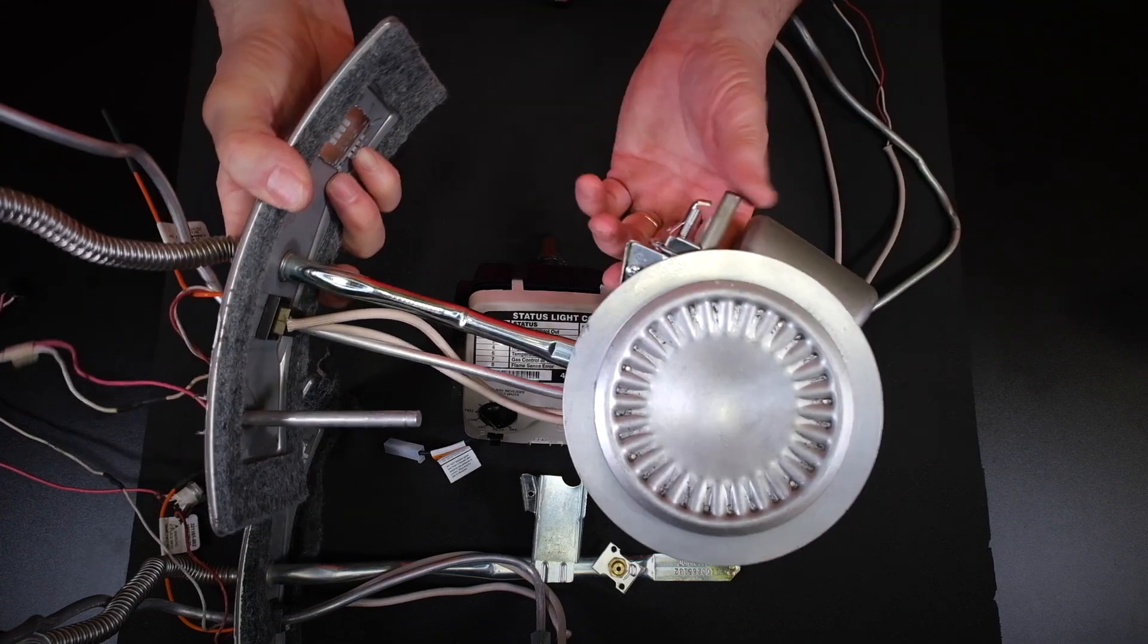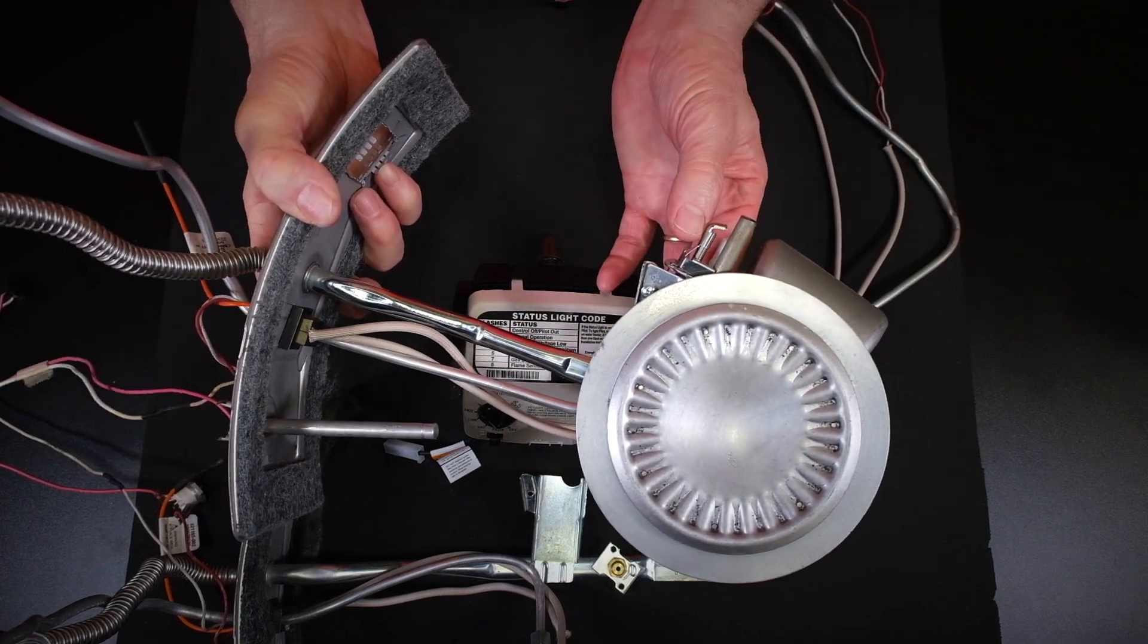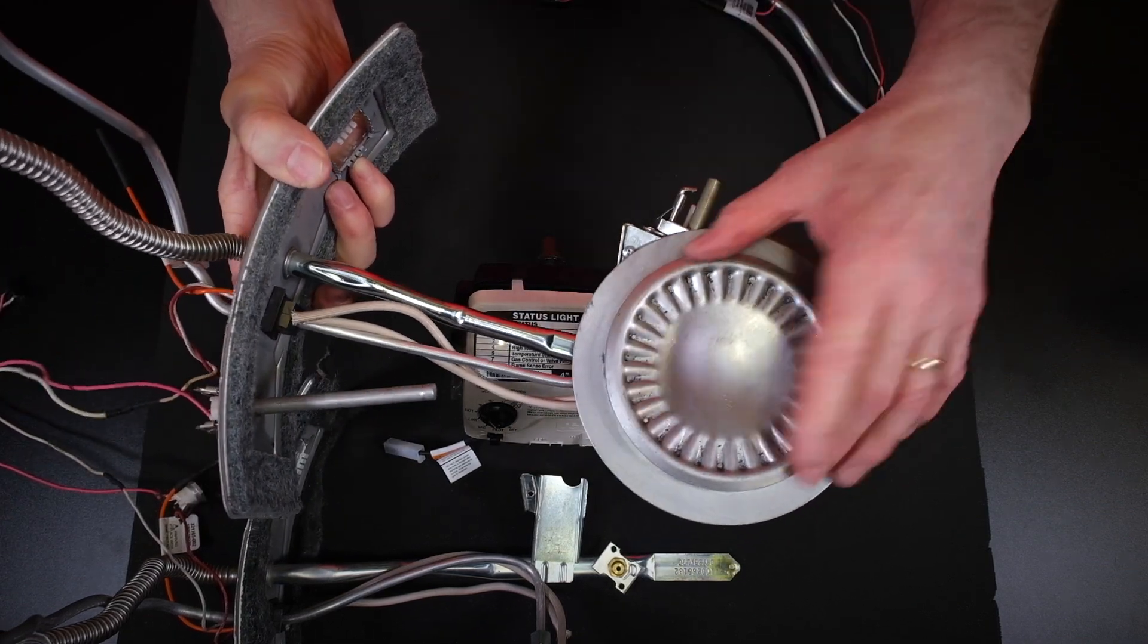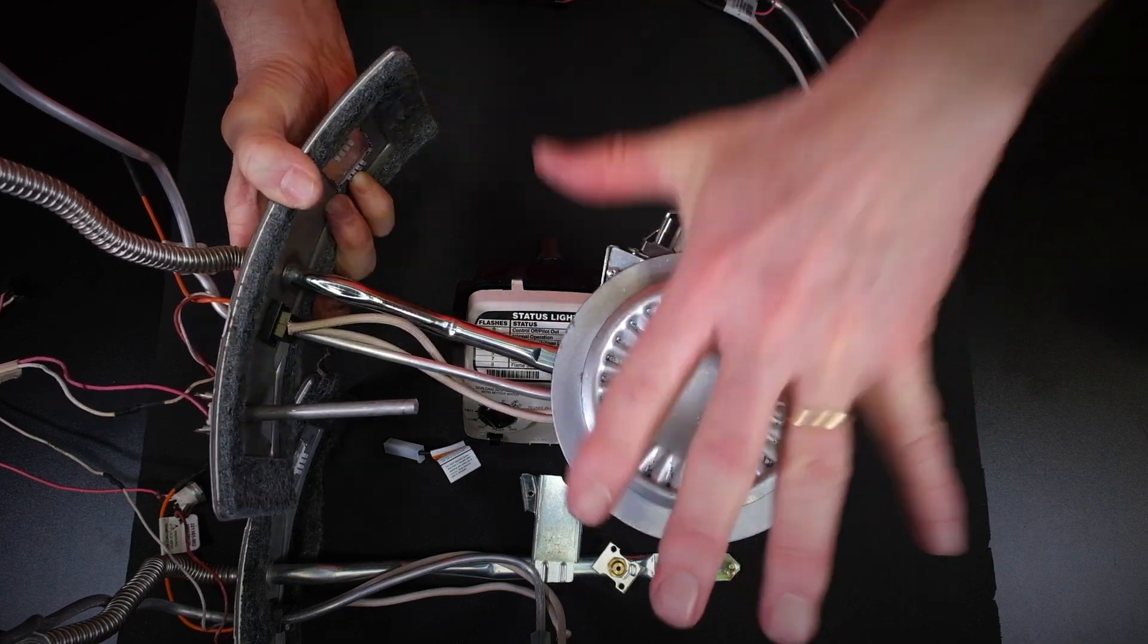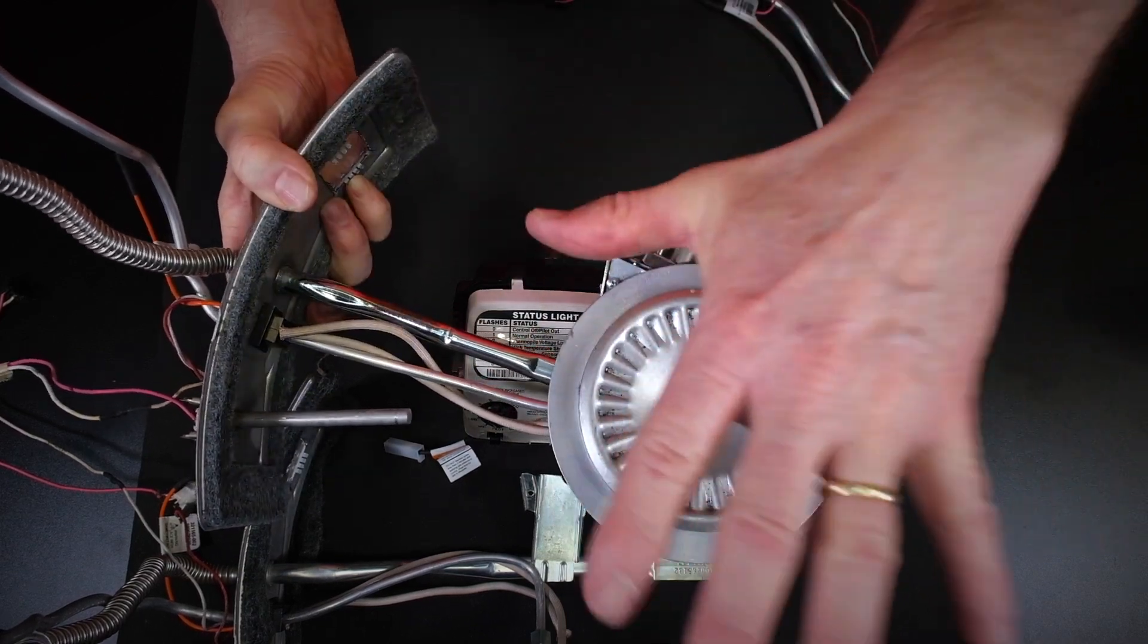This is the burner. Here's your pilot assembly with your thermopile, your pilot, and your igniter. This is where the gas comes out underneath the tank and heats up the water.